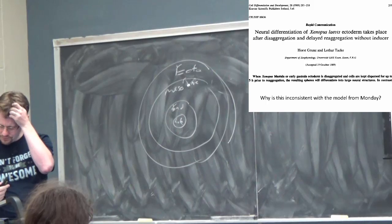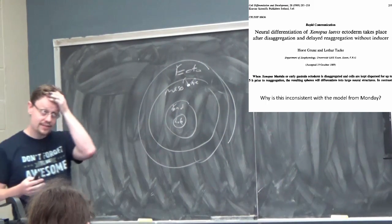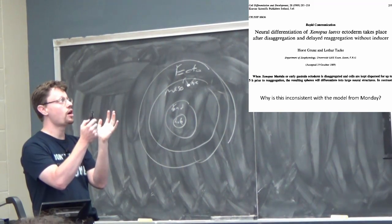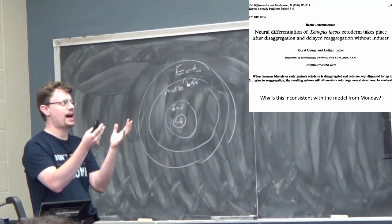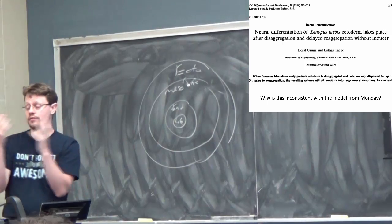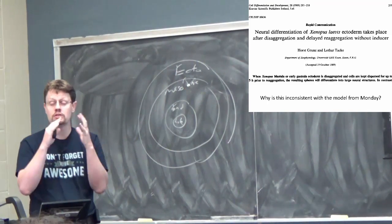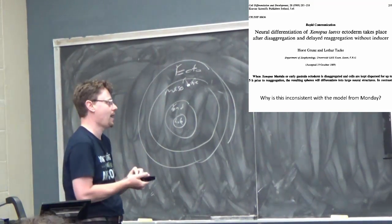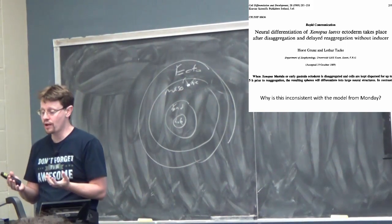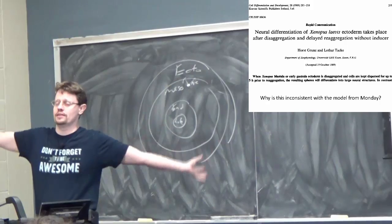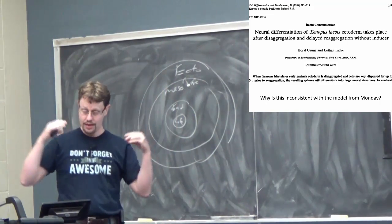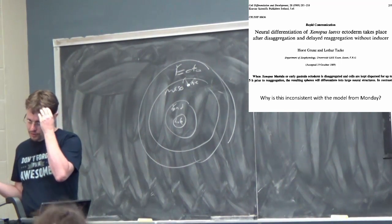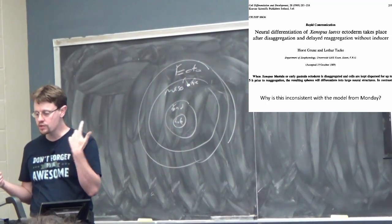And that's inconsistent with our model from Monday. Because here we've now not only removed the noggin signal - in Monday's class we had some various manipulations where we got rid of the notochord, removed the noggin signal, and when we do that, we get rid of the nervous system. And that sort of led us to think, okay, noggin is the signal that turns on the brain pathway. But now we're not getting rid of just the noggin signal. We're getting rid of all the signals by isolating these cells from any neighbors. When we get rid of all the signals and isolate those cells from any neighbors, then we get nervous system tissues.